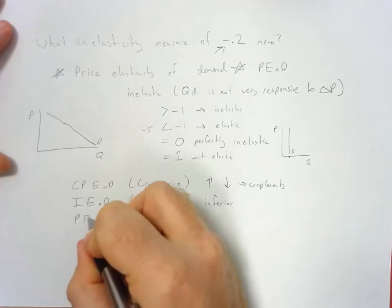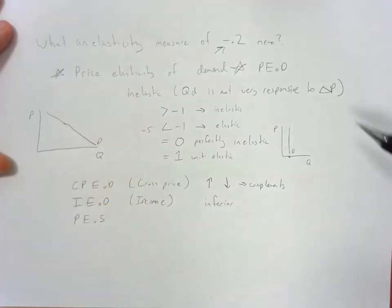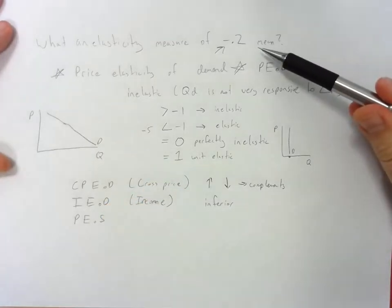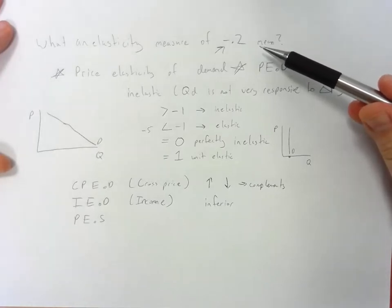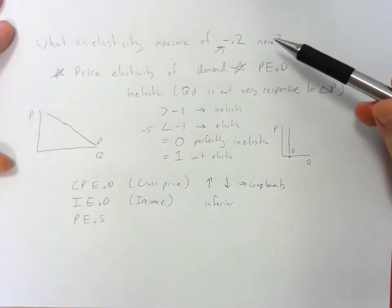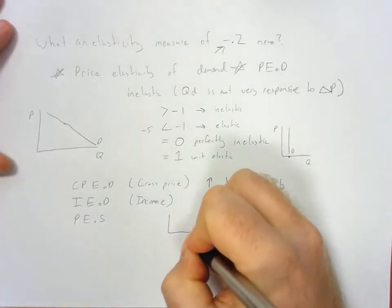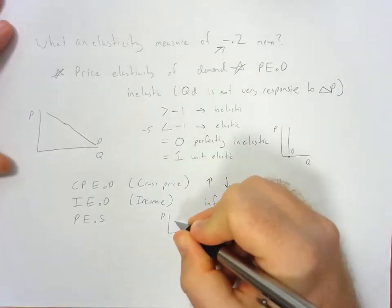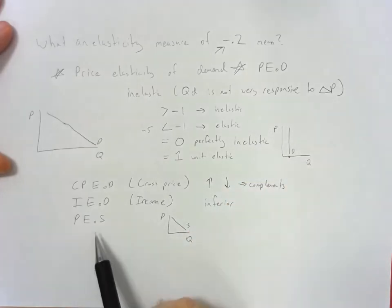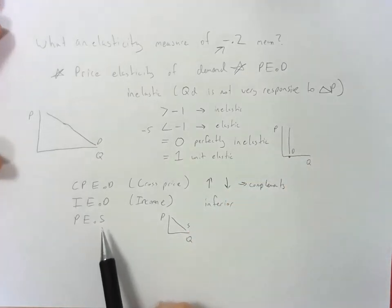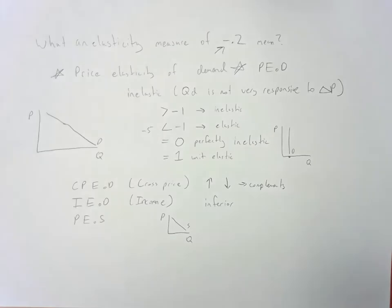And then finally, we could have the price elasticity of supply. The fact that this is a negative value means that there's a negative relationship between price and quantity, so you have a downward sloping supply curve, which never happens in the real world. So I can confidently assume that you are not looking at the price elasticity of supply with an elasticity measure of negative 0.2.